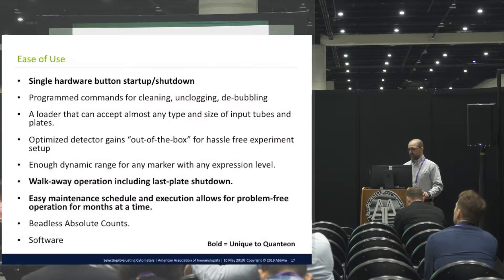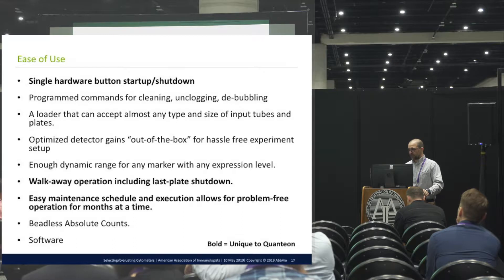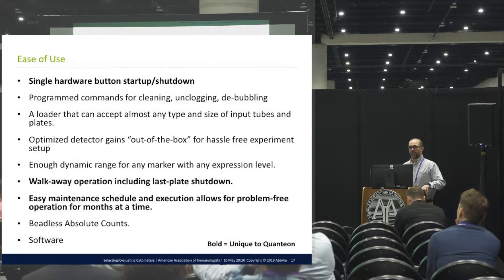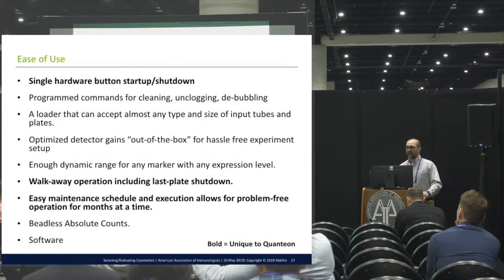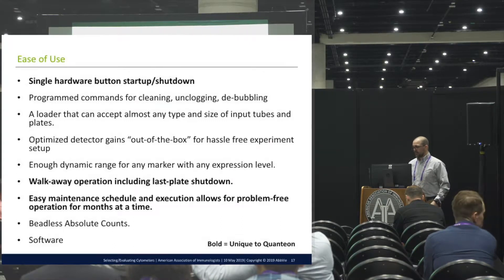Of course it has programmed commands for cleaning, unclogging, and debubbling. You don't need to put any additional tubes or plates on it because it has cleaning solutions on board that can run through and unclog and clean the instrument for you. The loader has the capacity to accommodate pretty much everything you'd want — any kind of plate including UV, flat bottom, 96-well, 384-well, deep-well plates, and a rack of tubes. So whatever user comes into the lab with samples, whether in little bullet tubes or standard plates, you can put them directly on the instrument without transferring to a different format. We've also talked about the optimized detector gains out of the box, easy setup, and the dynamic range.